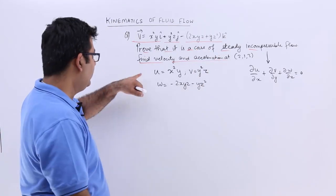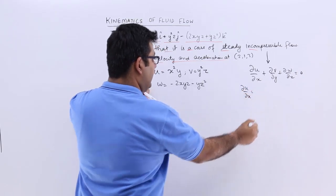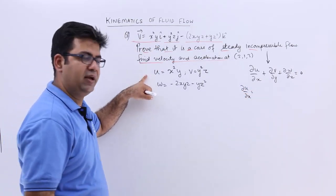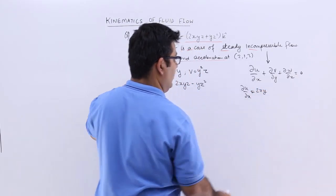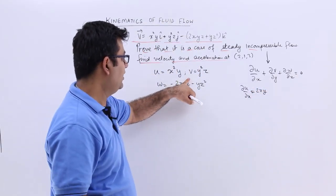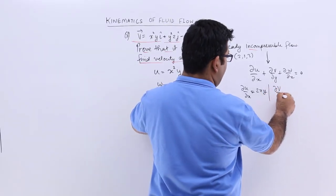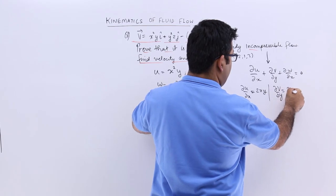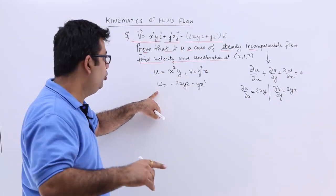So let's find out ∂u/∂x, which would be 2xy. ∂v/∂y would be 2yz, so you have ∂v/∂y as 2yz.